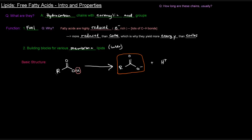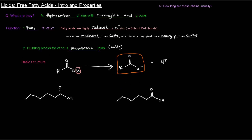So what can this actually look like? This R group is a hydrocarbon chain — so let's make it six carbons long as an example. This is a fatty acid. At biological pHs, it would exist in the carboxylate form without that proton. Now, how long are these chains usually? They can be from four carbons long up to 36 carbons long, typically, and they're usually even-numbered. So in nature, you'll typically see fatty acids that are 16 carbons long, 18 carbons long — even numbers.